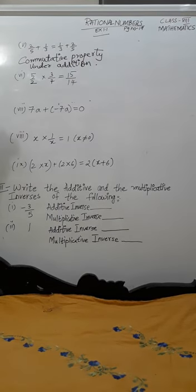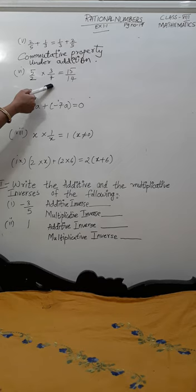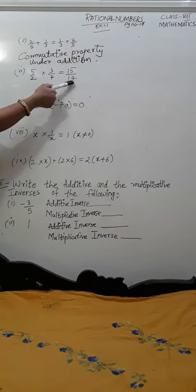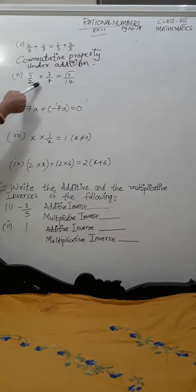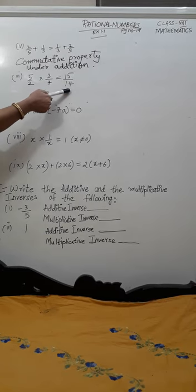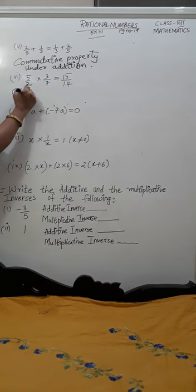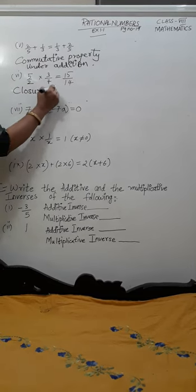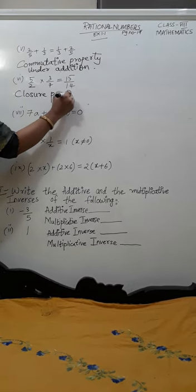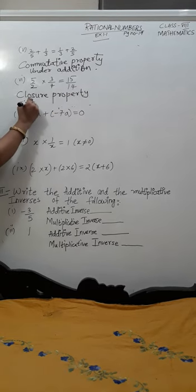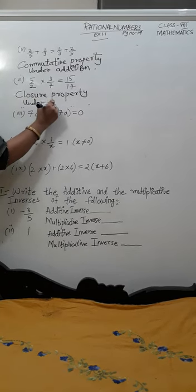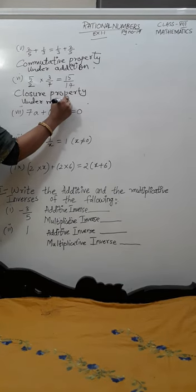Next one, 5 by 2 into 3 by 7 is equal to 15 by 14. The two rational numbers were multiplied. Again you are getting a rational number. Which property is this? Closure property under multiplication.